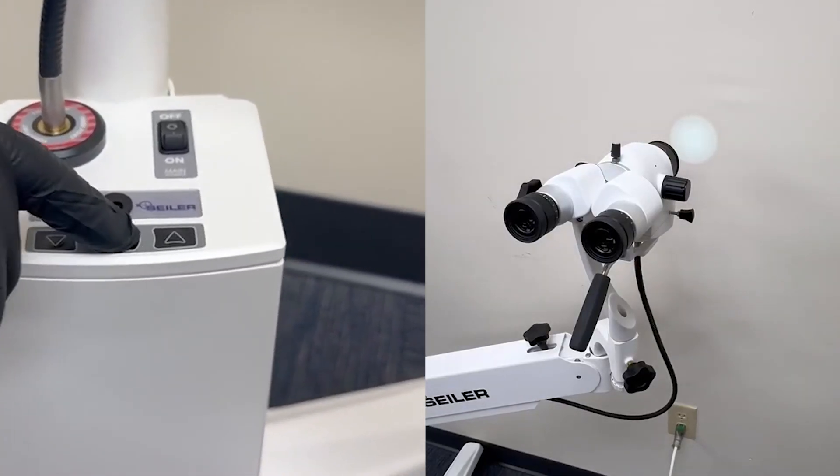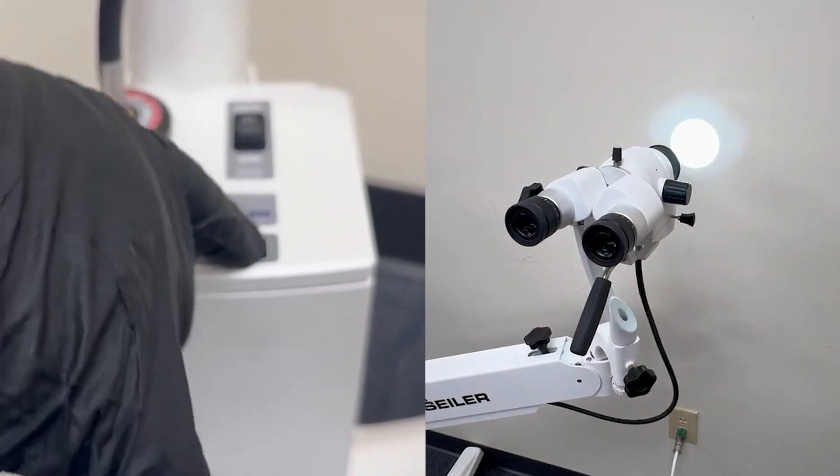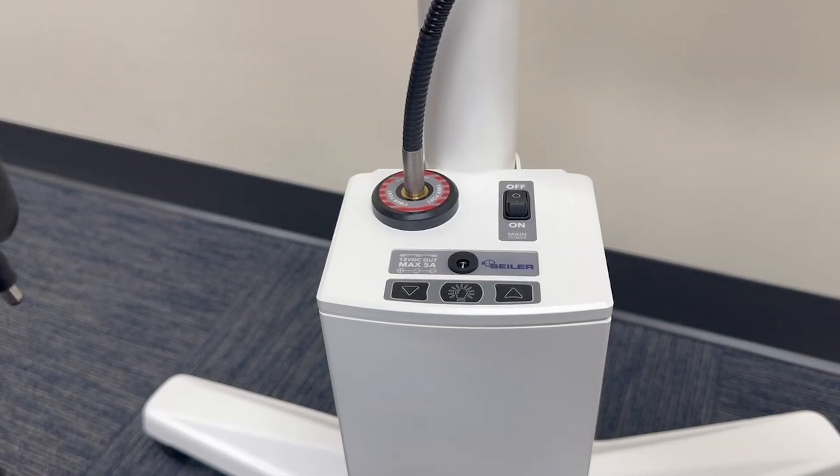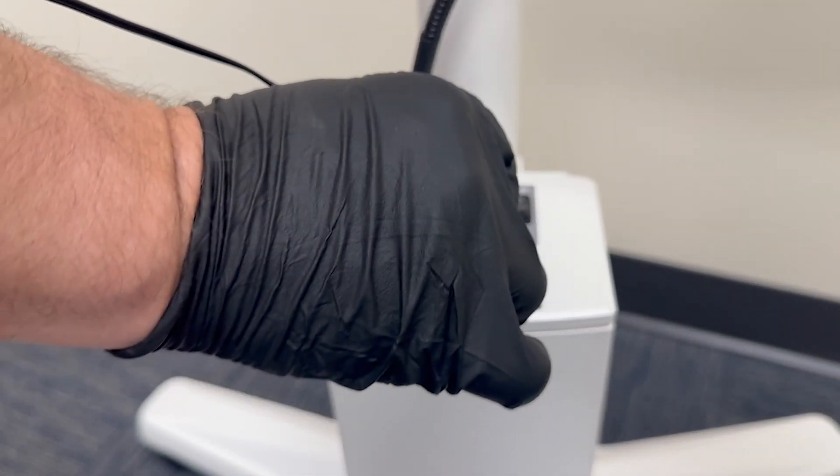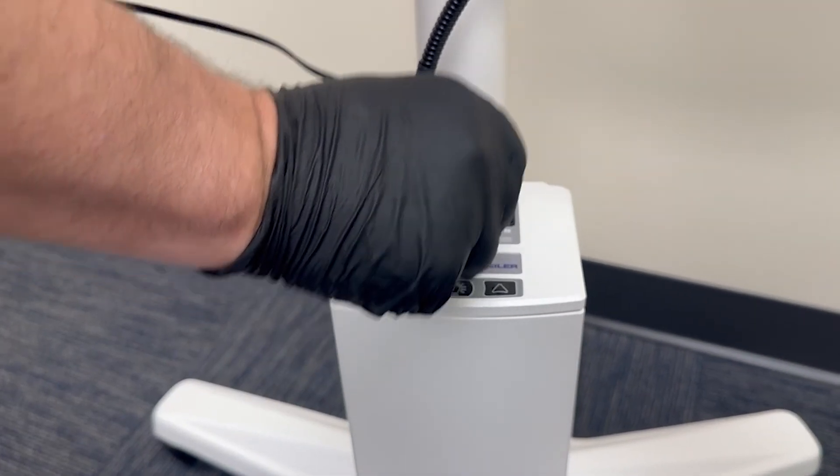Siler sets the gold standard in medical illumination, boasting an impressive illumination intensity of over 100,000 LUX through its LED light source. Siler Colposcopes come equipped with a 12V power source, which allows for the integration of a camera's power directly into the Colposcope.